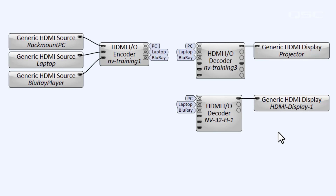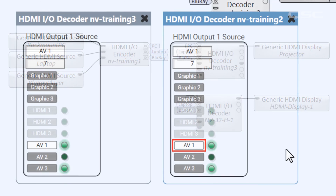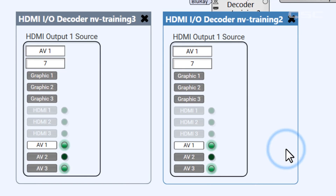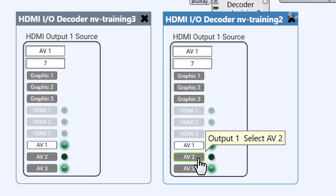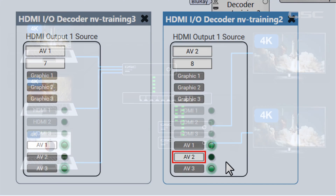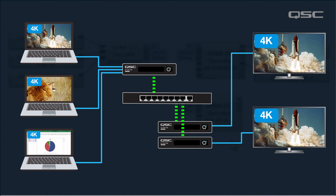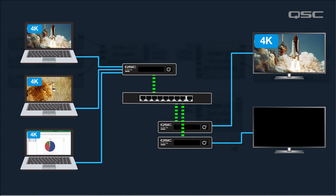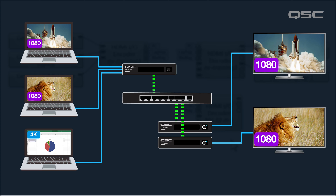You can multicast your 4K streams, as long as the encoder is only encoding one stream at a time. But if your second decoder selects a different source, forcing your encoder to encode two different streams, then it can only encode those streams at 1080p, not 4K.